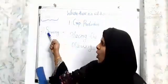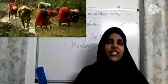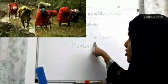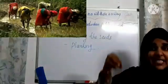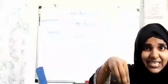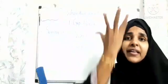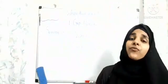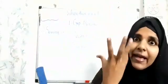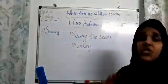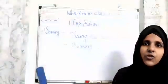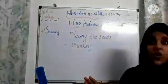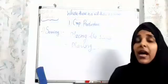So children, what is sowing? Sowing means it is the process of placing the seeds in soil for growing a plant. That is what we call the sowing process, and we also call it planting.